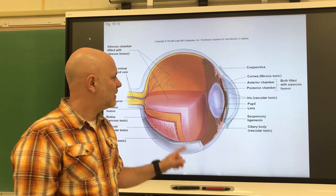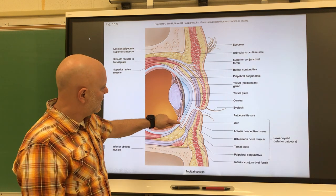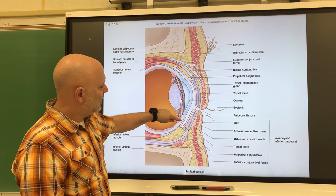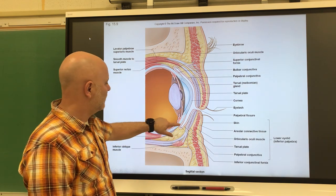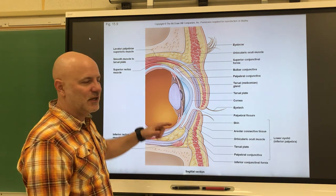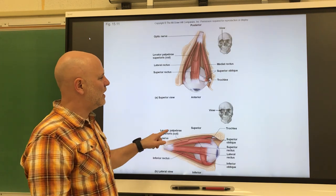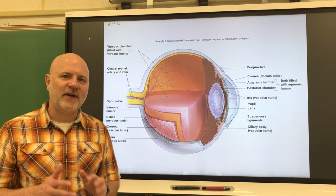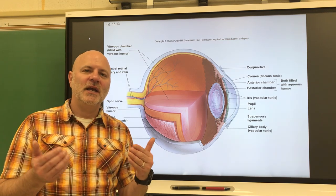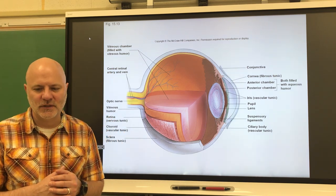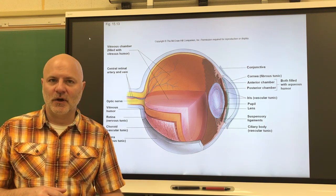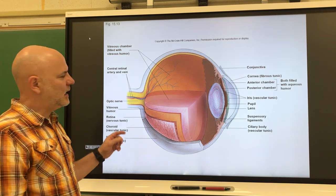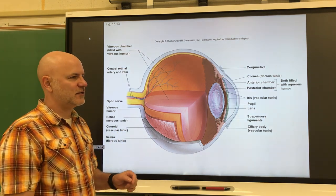Conjunctivitis is an inflammation of the conjunctiva — pink eye is one type. That infection doesn't get into the eye because the tough fibrous covering prevents it; if it could reach the retina it could cause blindness. Just as the dura mater protects our brain and spinal cord, this covering prevents infections from spreading into the organ. The sclera also serves as an attachment for those extrinsic eye muscles.